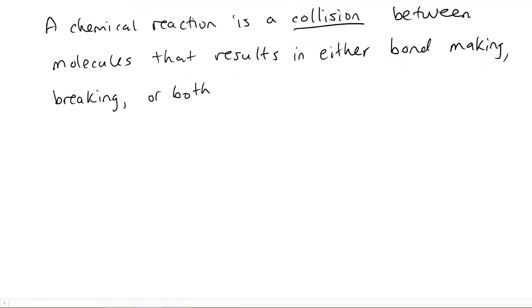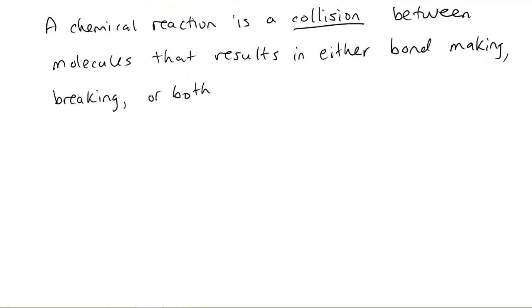This is important. This is our new friend in understanding what chemical reactions do. So this is the definition we need. We're not completely through yet. There's a little more we have to add to this, but this is the start. A chemical reaction is a collision between molecules. It results in either bonds being made, being broken, or both. You must keep that in mind as we start to try to figure out what chemical kinetics is all about. So on to the next video for you.